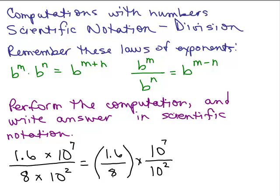We can do 1.6 divided by 8. You could use your calculator but this is pretty easy to do without a calculator. That's 16 divided by 8 which is 2, then you go in one place for the decimal point. So we have 0.2 times, and we have 10^7 divided by 10^2, so we subtract exponents. 7 minus 2.